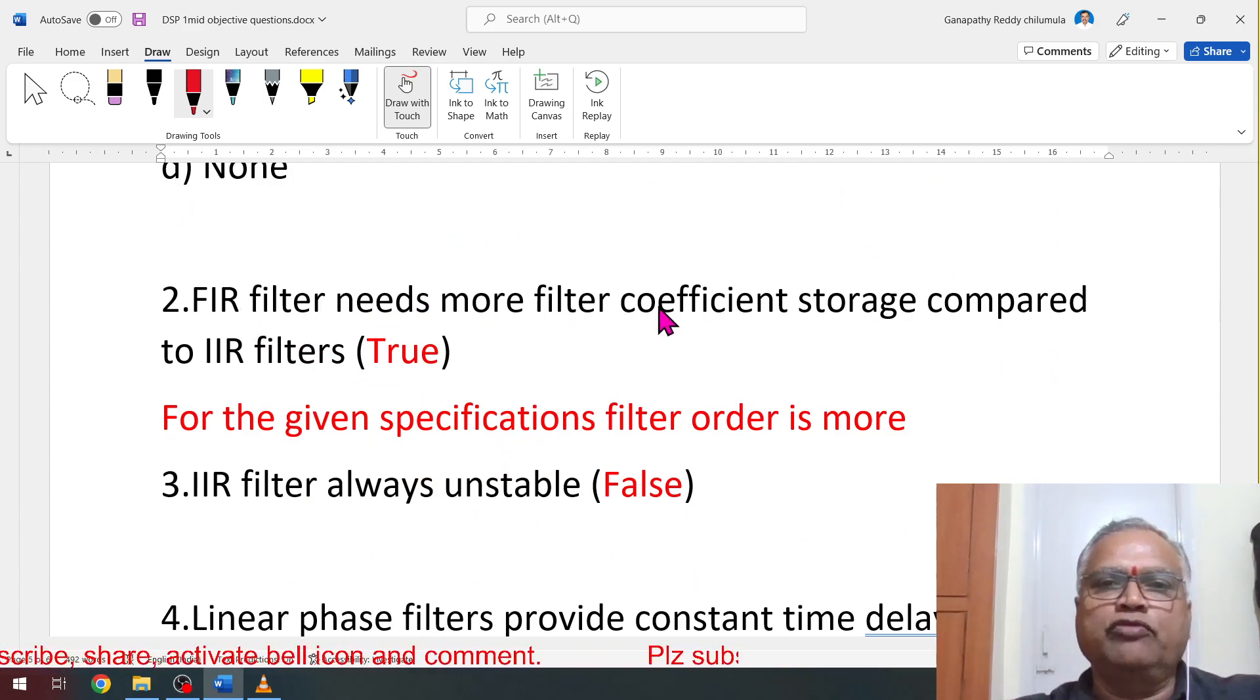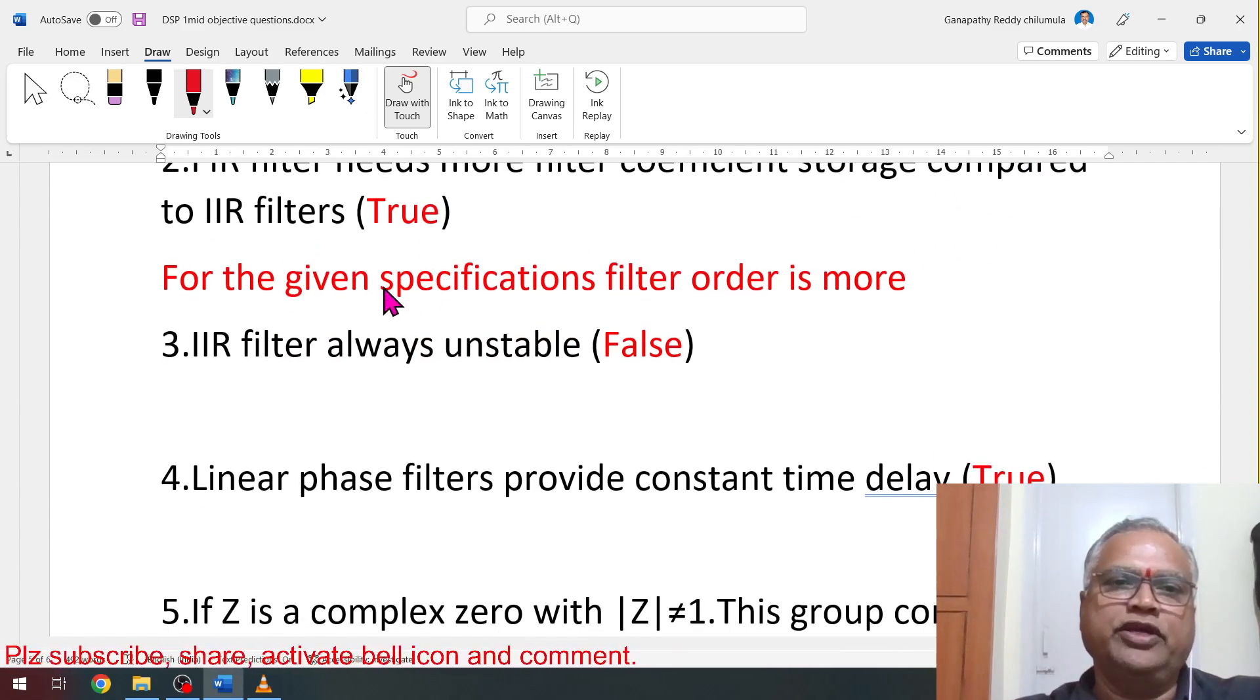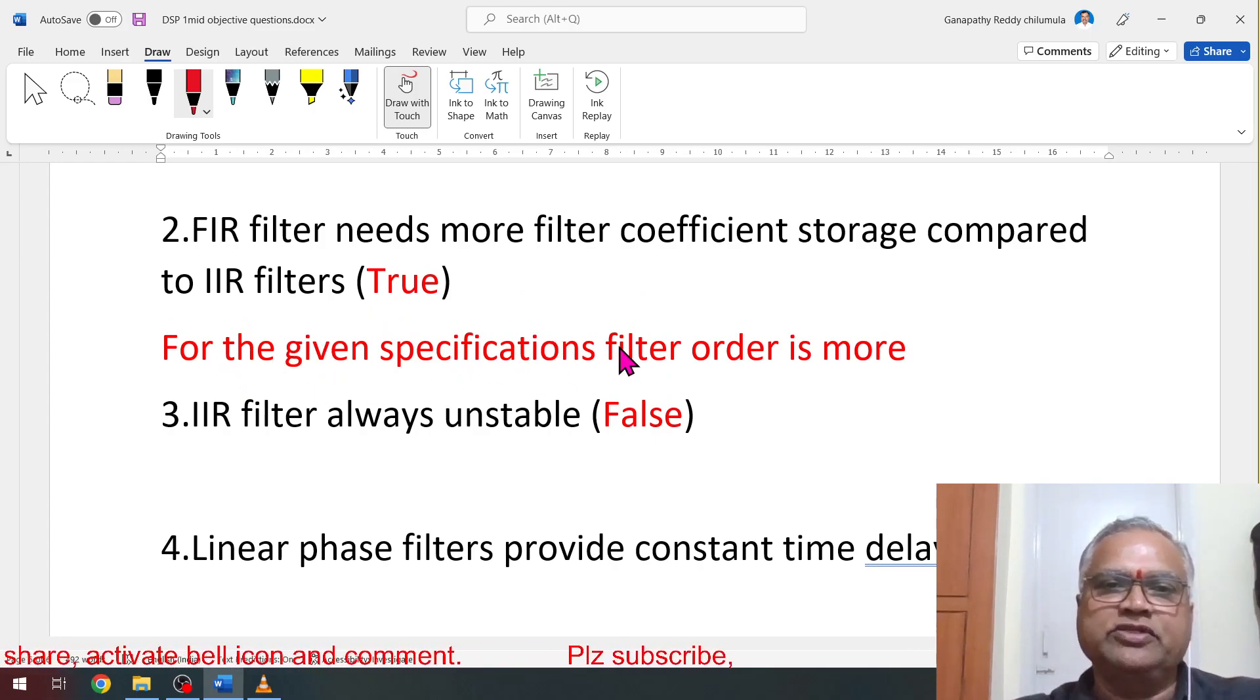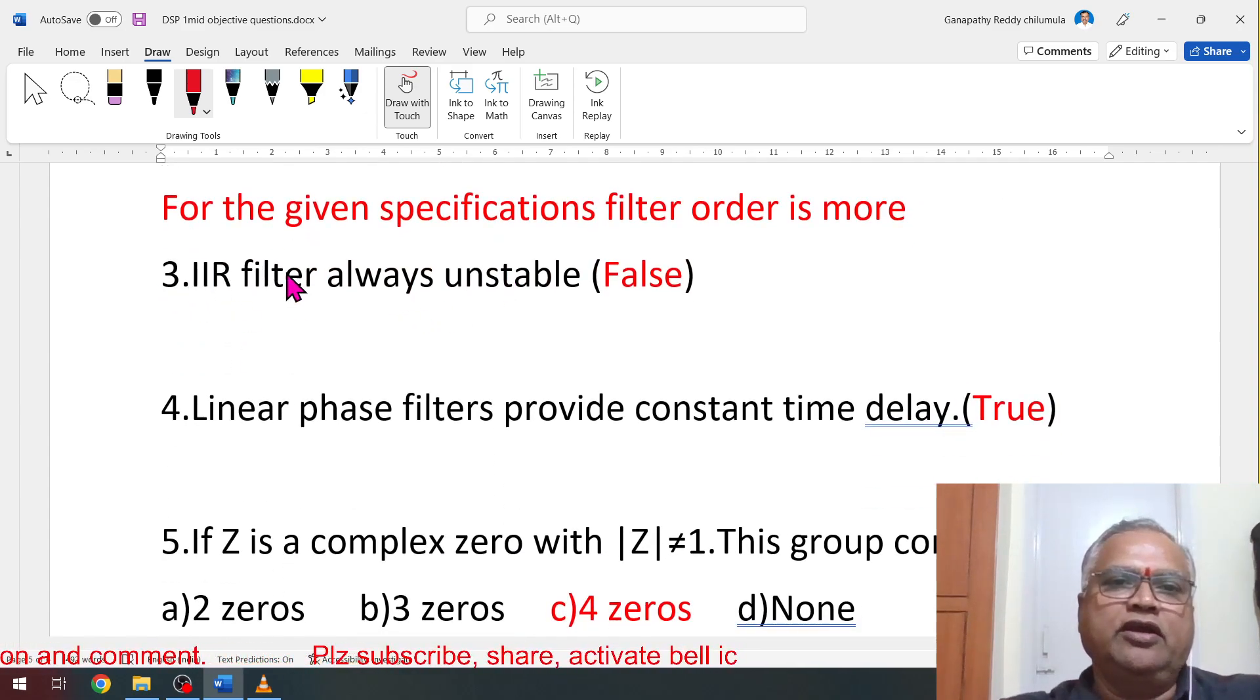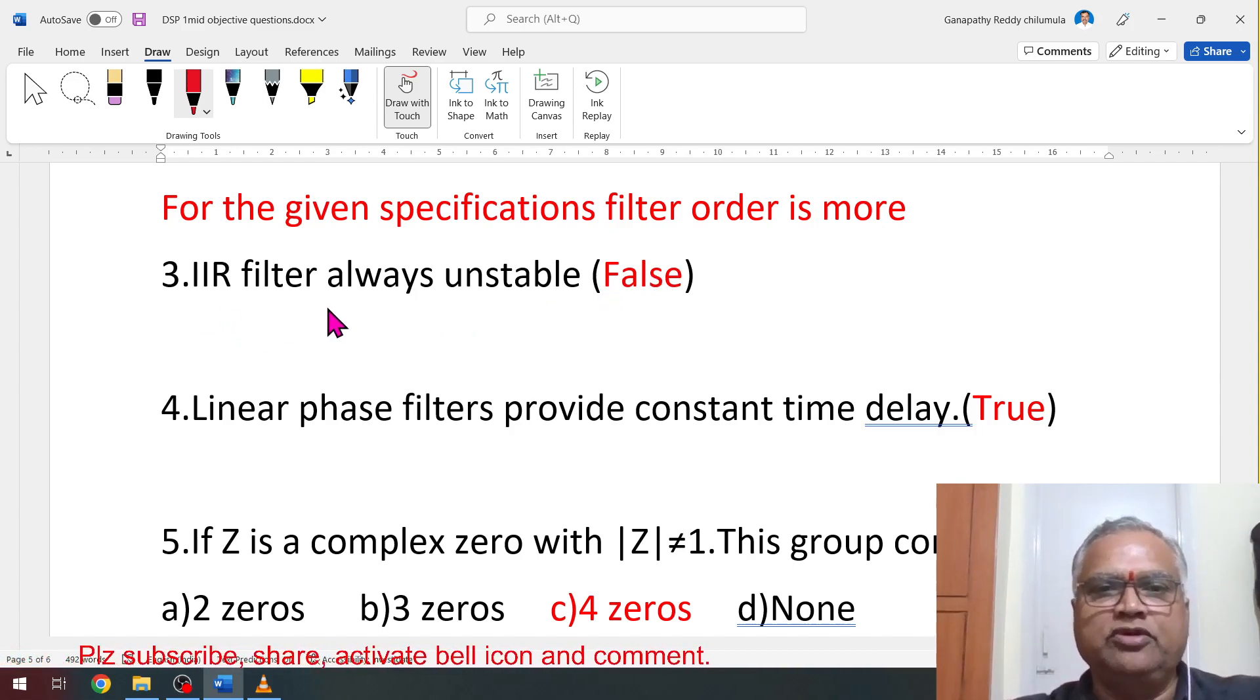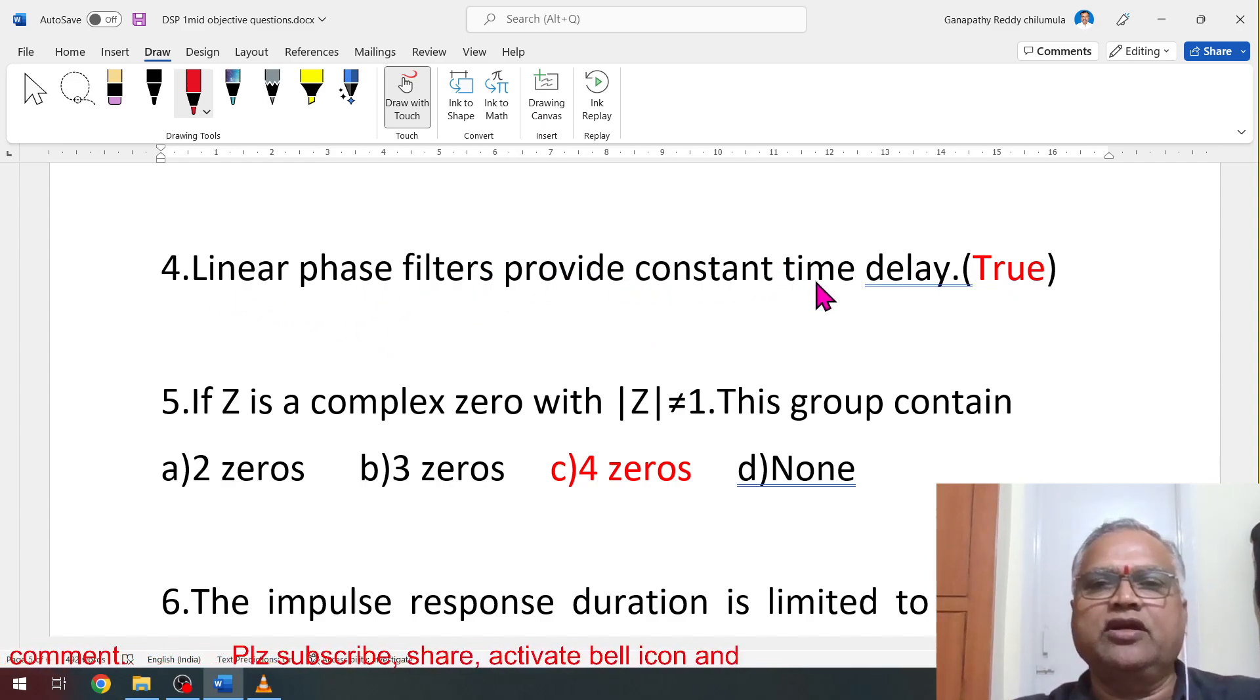FIR filter needs more filter coefficient storage compared to IIR filter. It is true. Why true? For a given specification, filter order in FIR is more. Filter order is more means more data is there and it needs more memory. More coefficient storage is required for FIR, it is true. IIR filter always unstable is a false statement. IIR filter can be stable or it can be unstable. Linear phase filters provide constant time delay. Linear phase filters provide constant time delay means phase delay, group delay equal. It is a true statement.